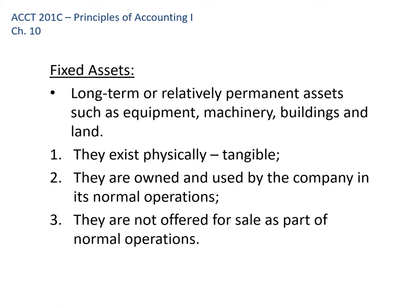Fixed assets are also not offered for sale as part of normal operations. So I might have a factory making picnic tables and I have a truck — that's a fixed asset for me. But the Ford dealership where I bought the truck has a truck that's inventory for them, not used in their normal operations.